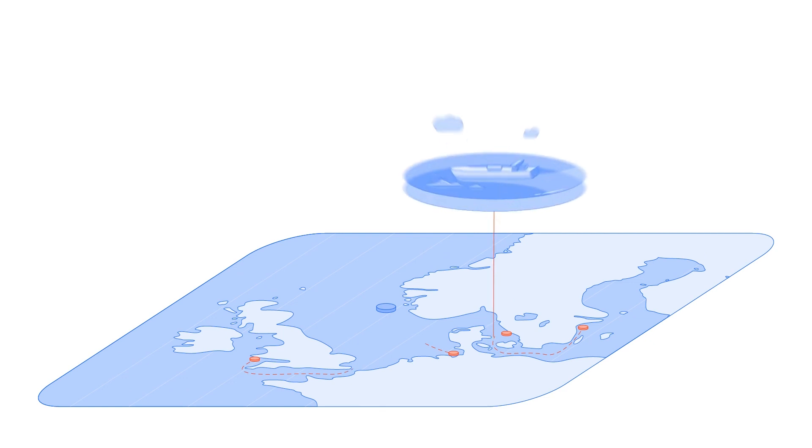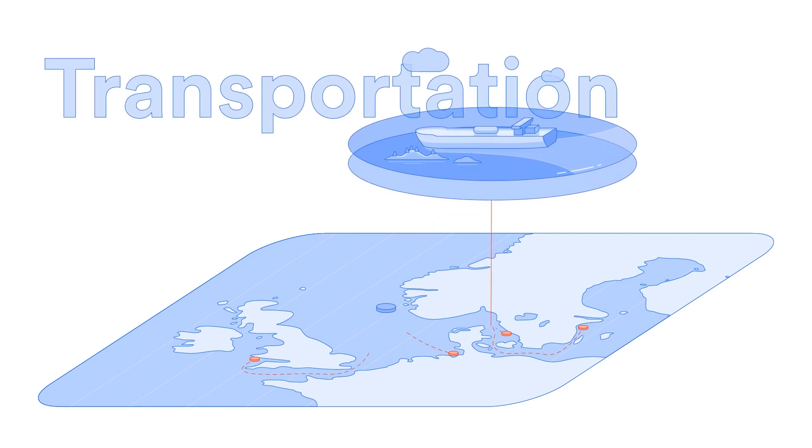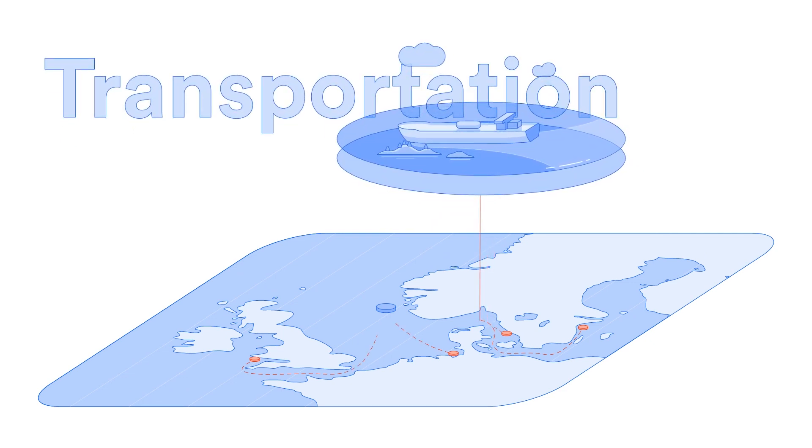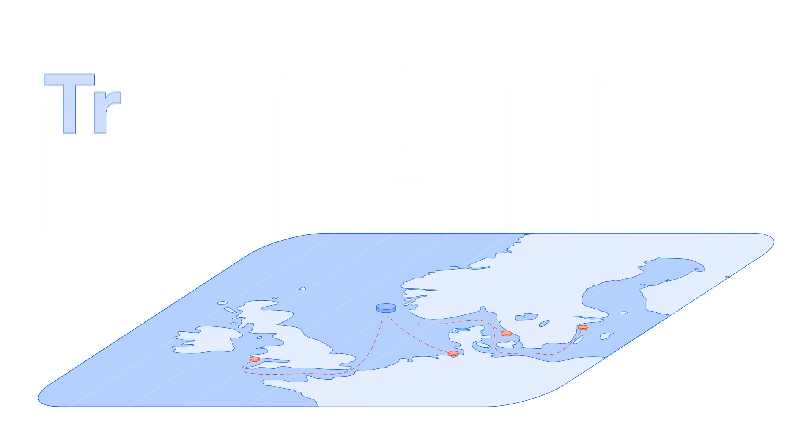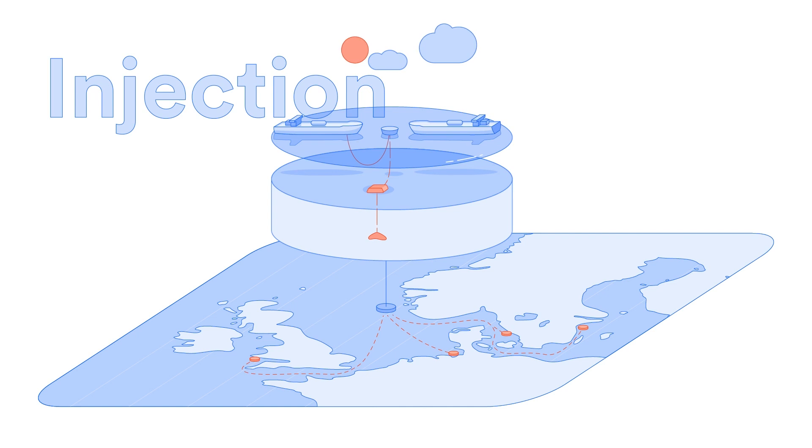CO2 will be transported by our fleet of large shuttle carriers to a field injection unit stationed above a storage reservoir. The CO2 will be continuously injected into a secure and permanent underground reservoir.